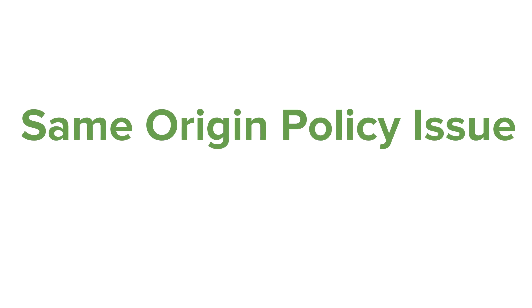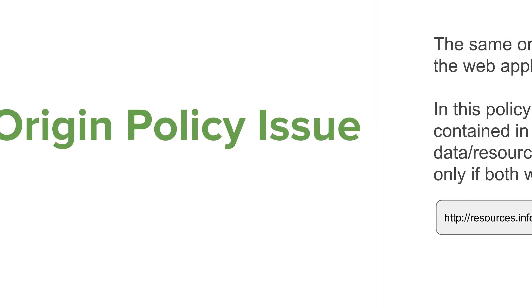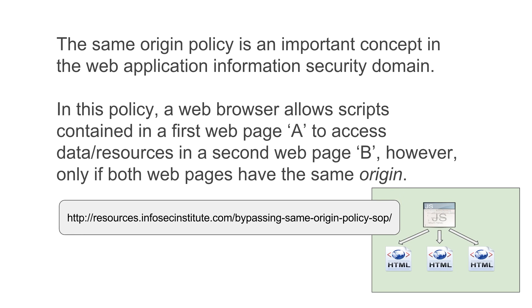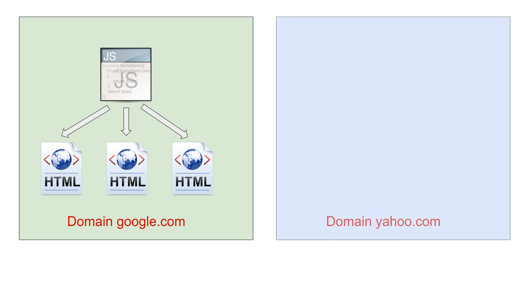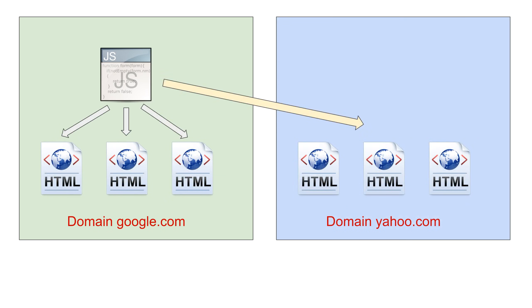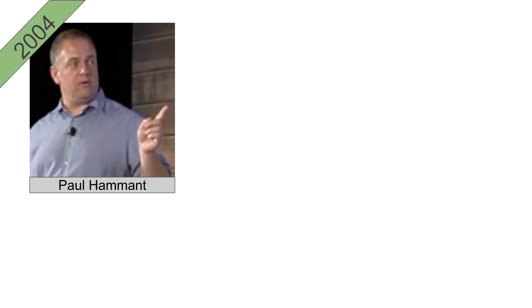However, there was a problem — the same origin policy issue. This policy says that a JavaScript within a domain can only access web pages within that domain; it cannot access any web pages outside that domain due to security reasons. For example, if you have a domain called google.com with a JavaScript, it can access all web pages within that domain but cannot access any web page outside it. This restricted the Selenium JavaScript from interacting with other web pages.